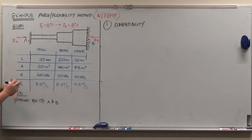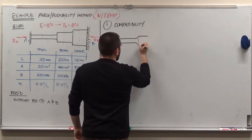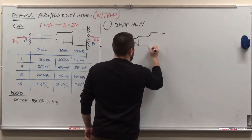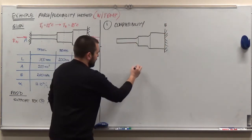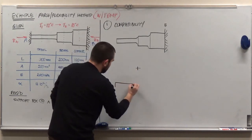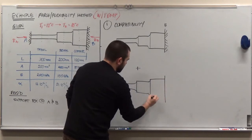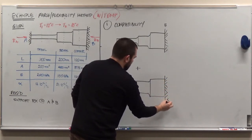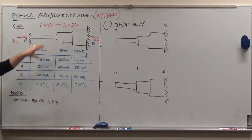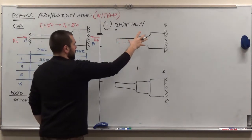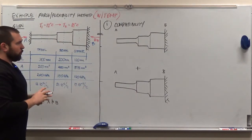We're going to remove the support at A and draw the same system without it. We still have the fixed support at B. I'm going to draw it two different times and add the results of each of the two different loadings together through superposition. This system is equal to a primary system with one specific type of loading plus the primary system with another type of loading — those two types of loading are applied in a relatively formulaic way.